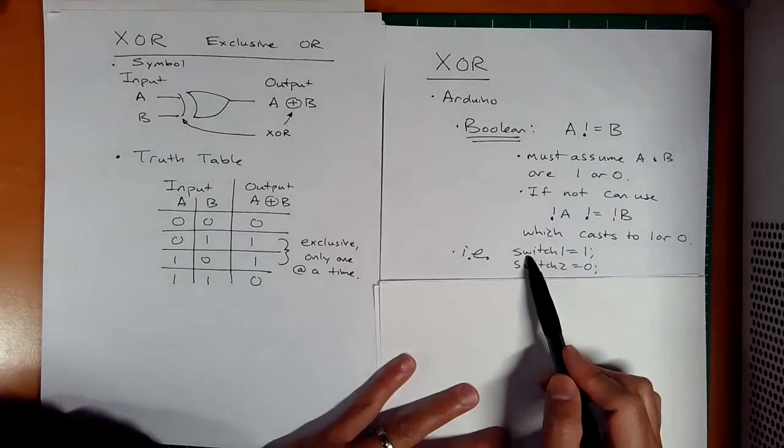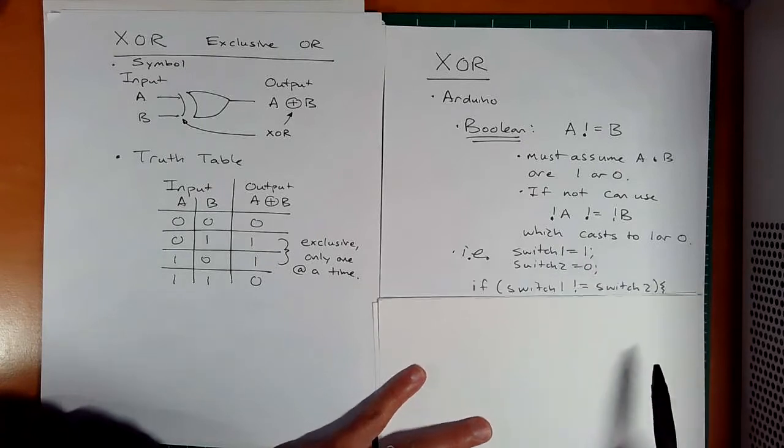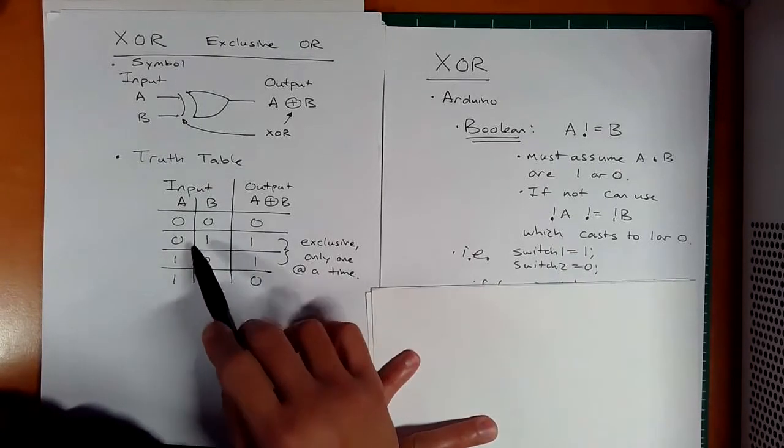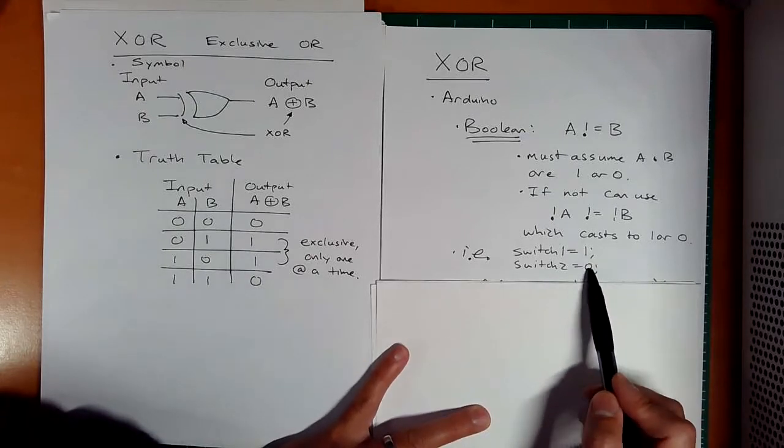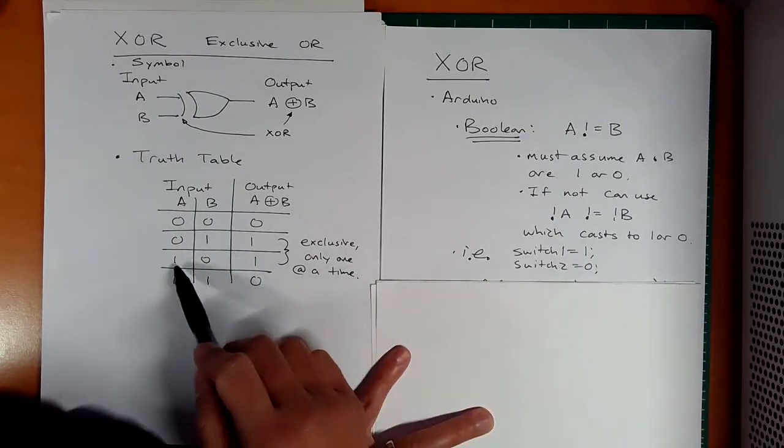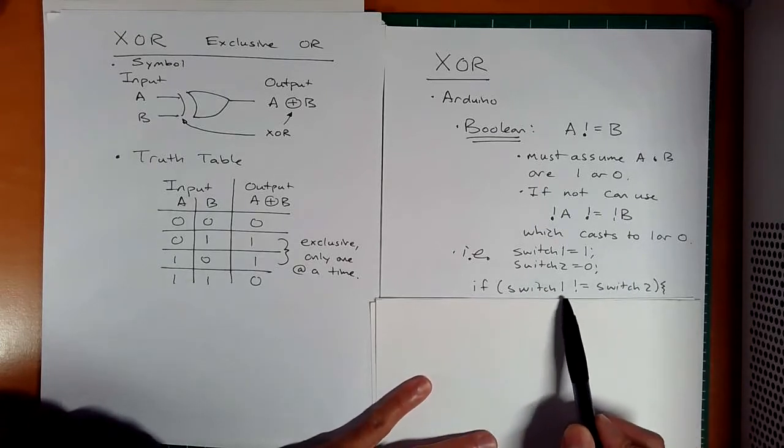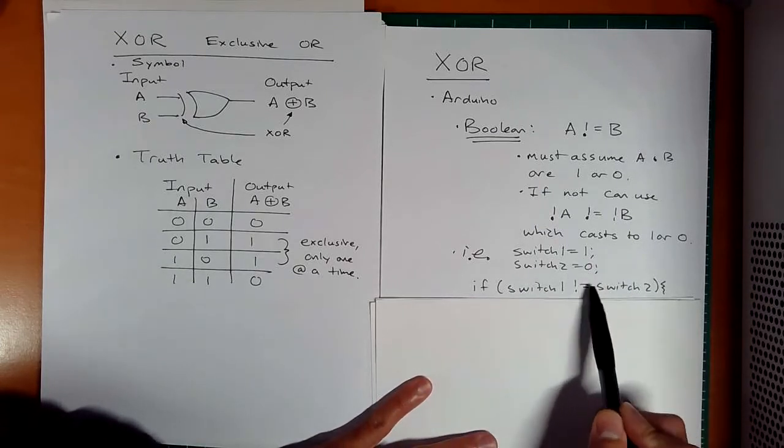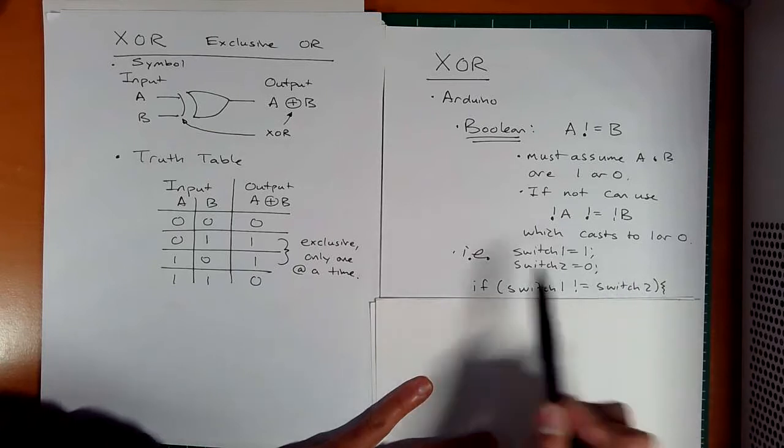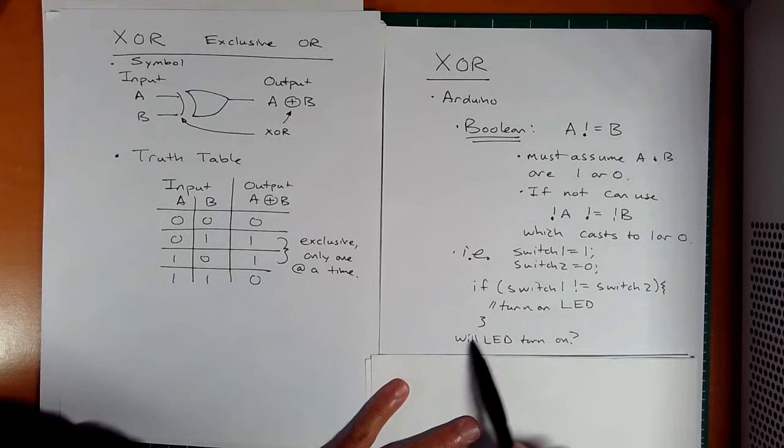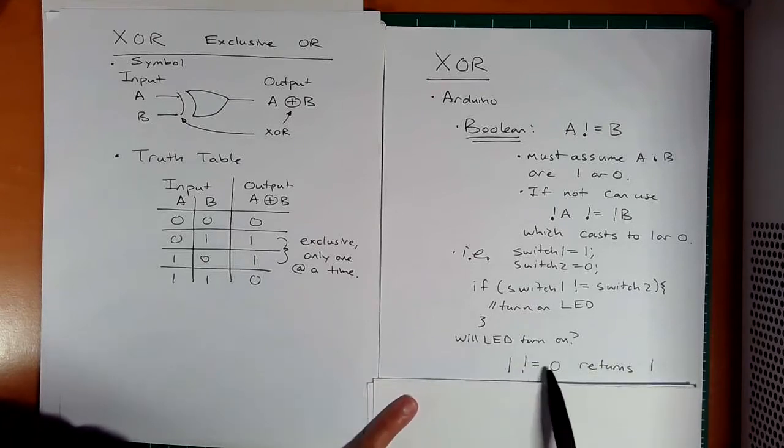If I have two variables, switch one and two, I want to see if this is true. According to this truth table, it should be, because I only have one of them true. So it should ping. But let's ask the question, is this doing a good job? Does one not equal to zero? Yes, it does. So in this case, if you had to turn on an LED, yes, it will.